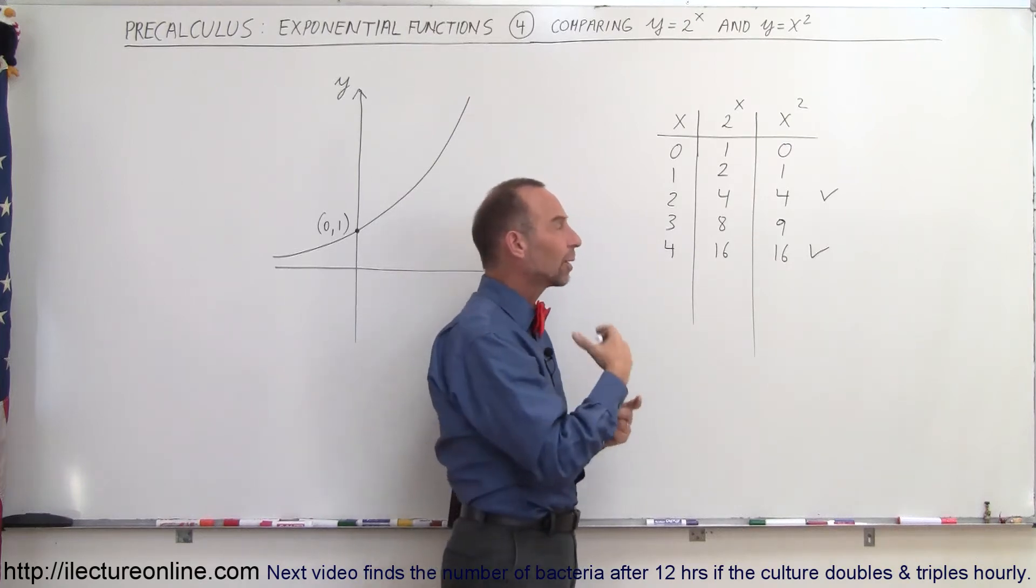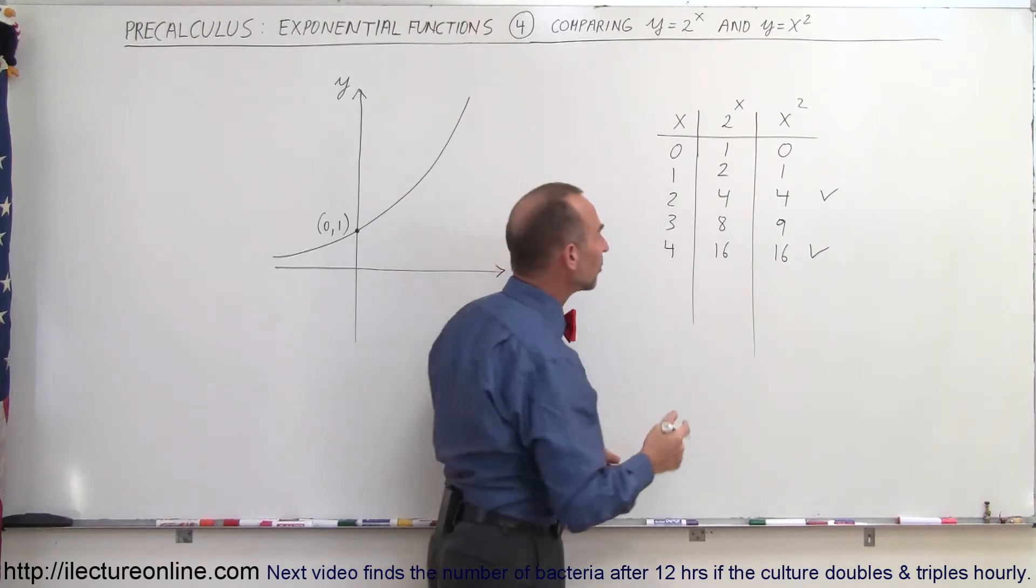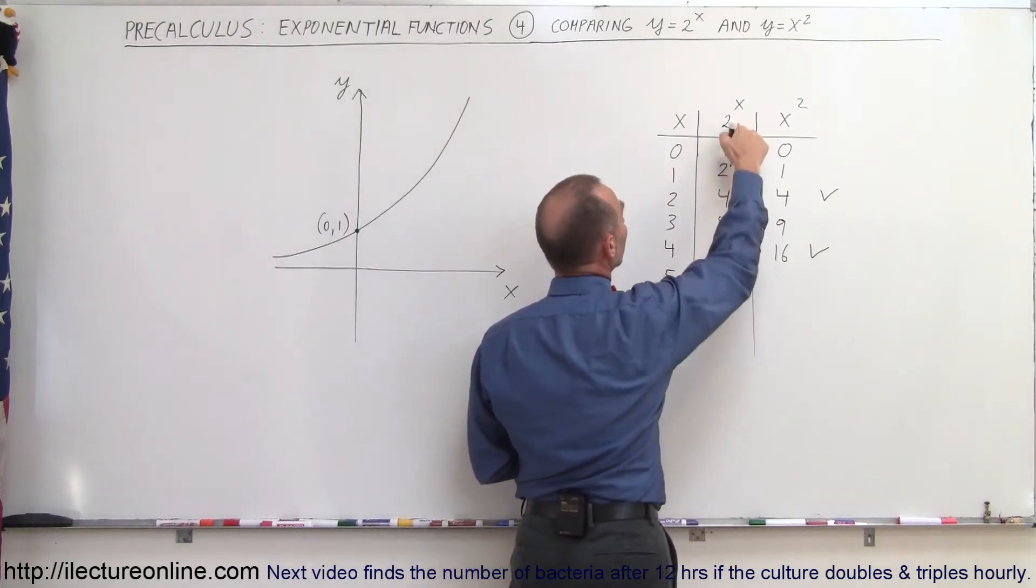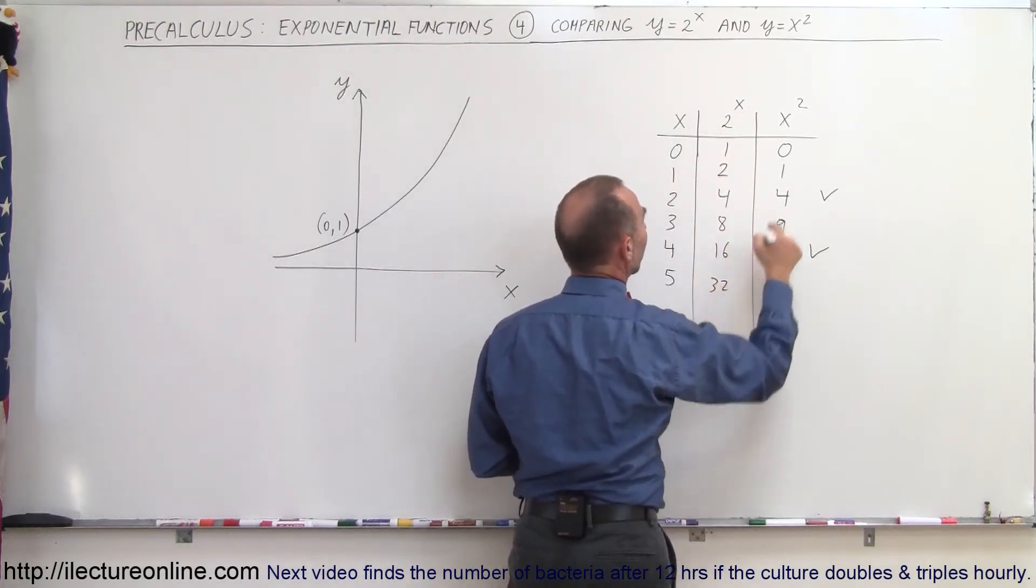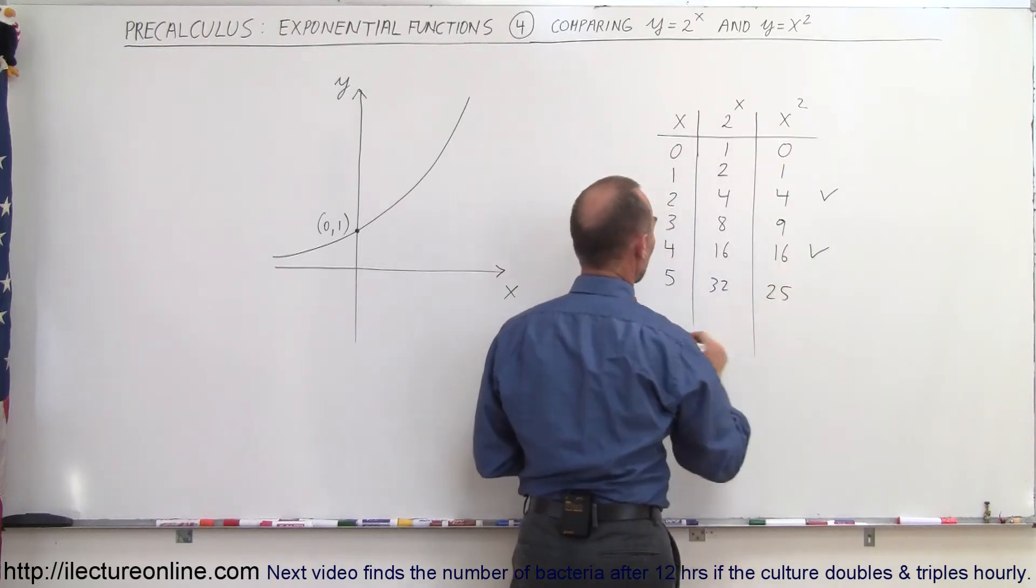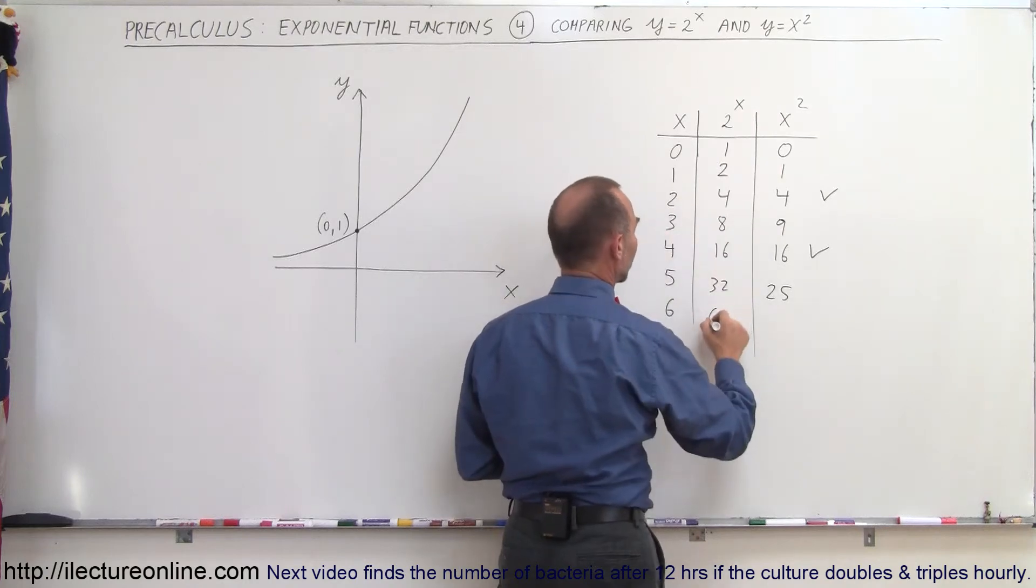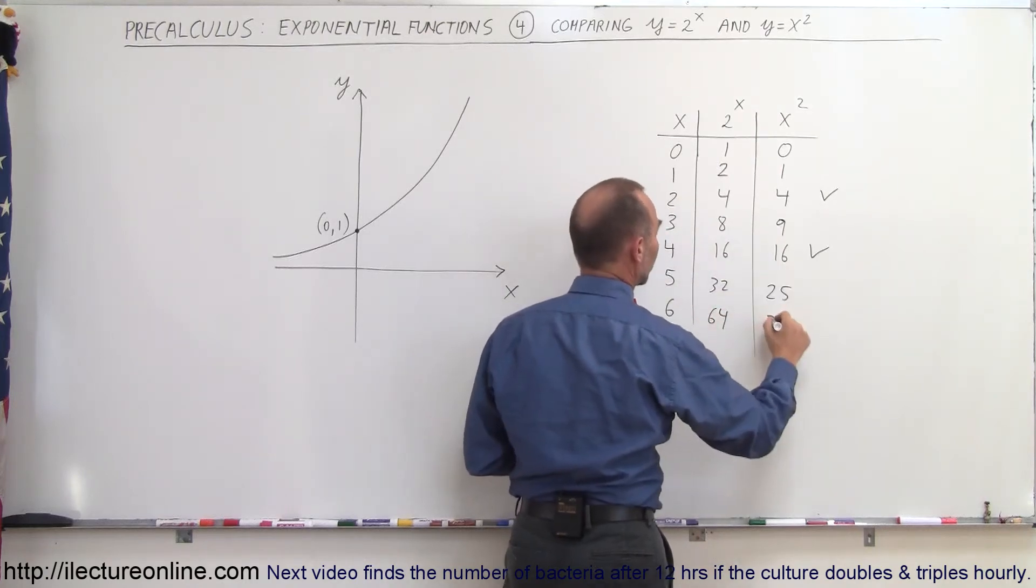But after that, when x becomes larger, the exponential function begins to win out, so to speak. So when x is equal to 5, 2 to the fifth power is 32 and 5 to the second power is 25. When we get to x equals 6, 2 to the sixth power is 64. 6 squared will be 36.